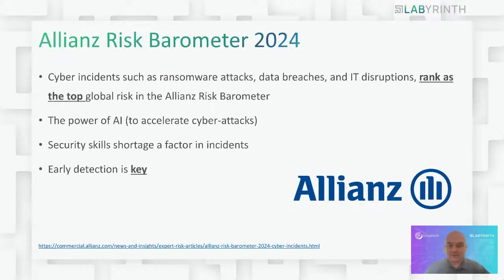I'd like to speak about a very interesting article — the Allianz Risk Barometer. Allianz is an insurance company that publishes this report every year. Risk number one from the report is that ransomware attacks and data breaches will increase. Allianz also speaks about AI — not only in a good sense, but AI used by attackers to be more effective with cyber attacks. Attackers are getting more and more advanced tools to make attacks successful.